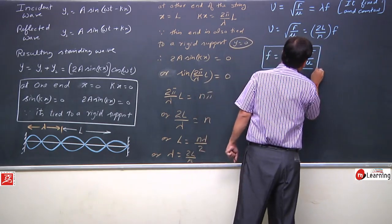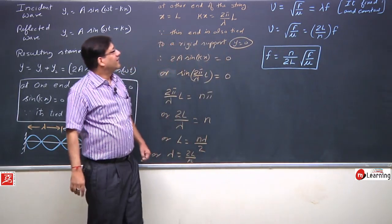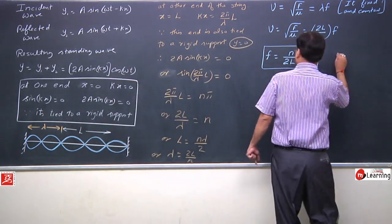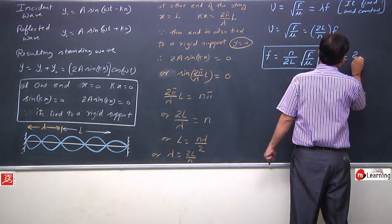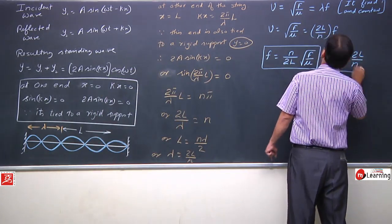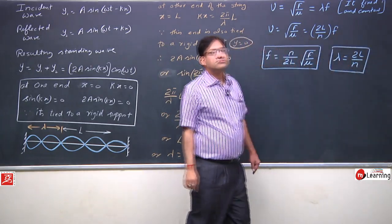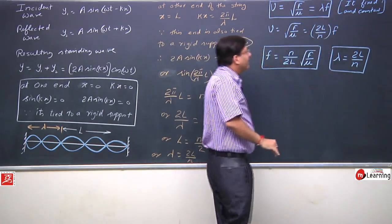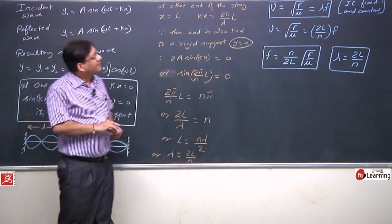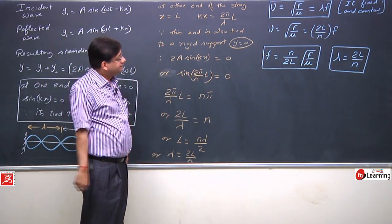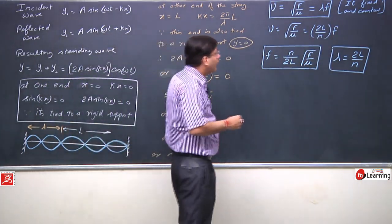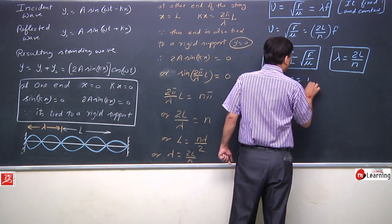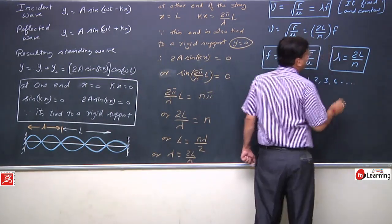So the frequency with which this string vibrates would be equal to f = N/(2L) × √(F/μ). This is the frequency with which the string would vibrate. This is also the wavelength with which the string vibrates, and this is the fixed velocity of the standing wave. Here N can be 1, 2, 3, 4, or any integer.